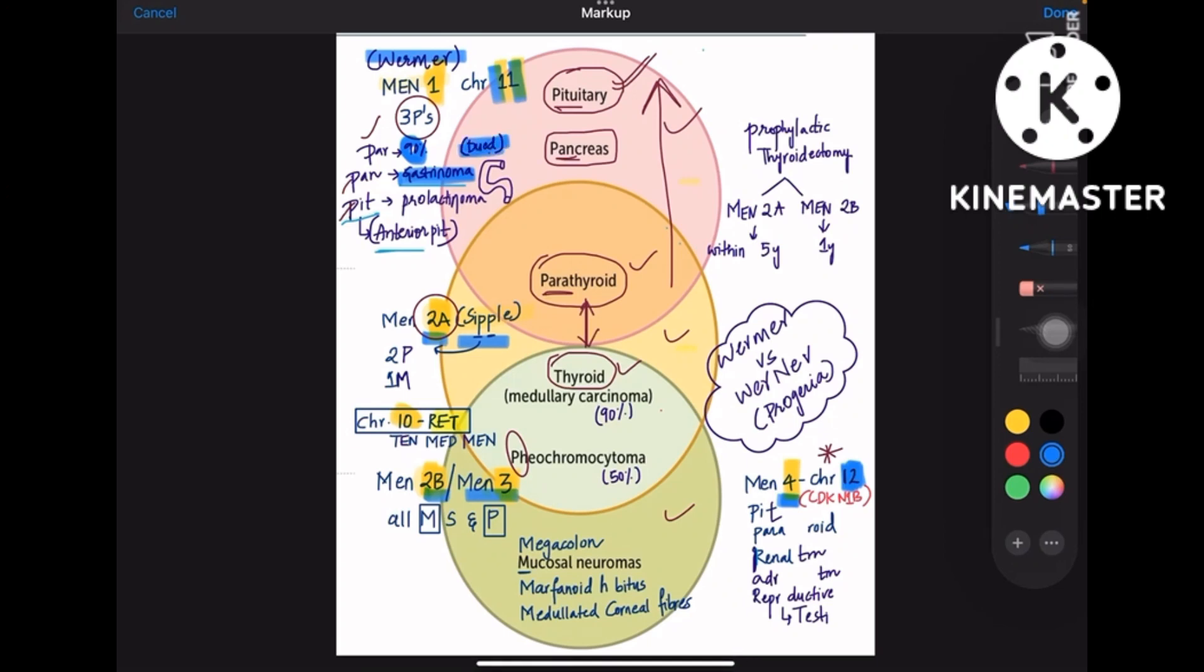Coming to pancreas, most common tumor that is involved is gastrinoma, and the gastrinoma's most common site is duodenum when associated with MEN1 syndrome. And pituitary gland, the tumor is prolactinoma.